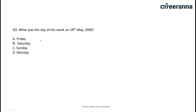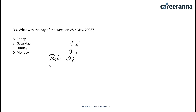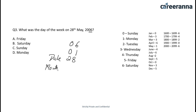Let's see question number three. What was the day of the week on 28th May 2006? In this type of question we have a pattern by which we can solve it. We take the last two digits of the year — that is 06 — and we divide this by 4 and add it to that number. Then we take the date, which is 28, and then we take the month. For the month and year, a table is given and we use those values.